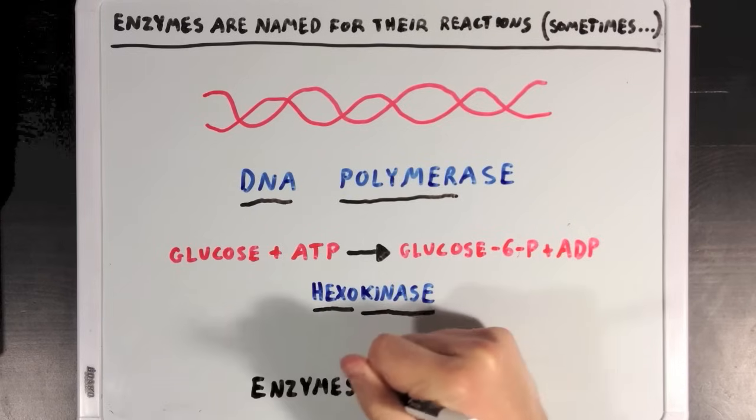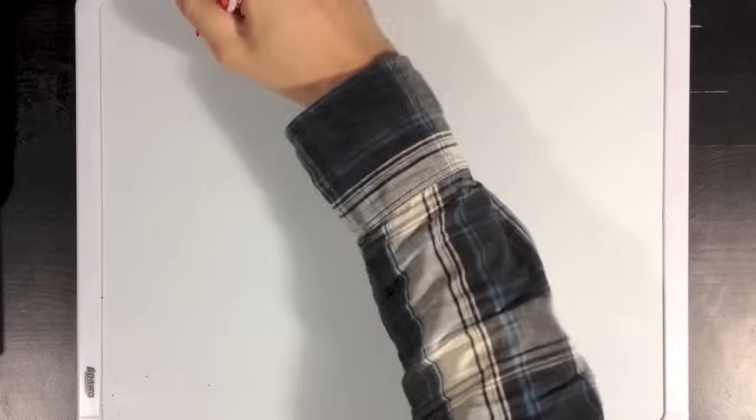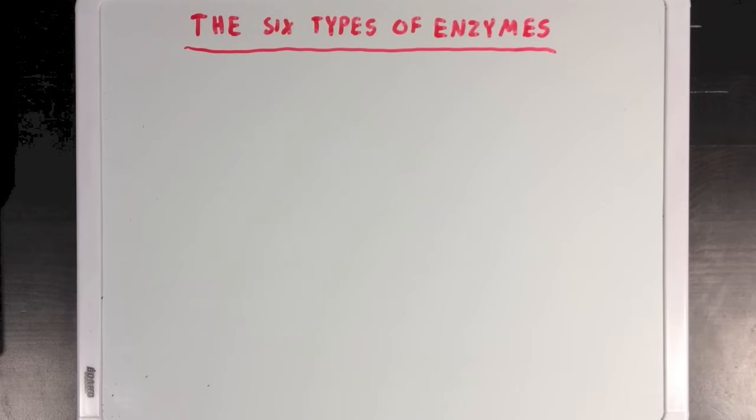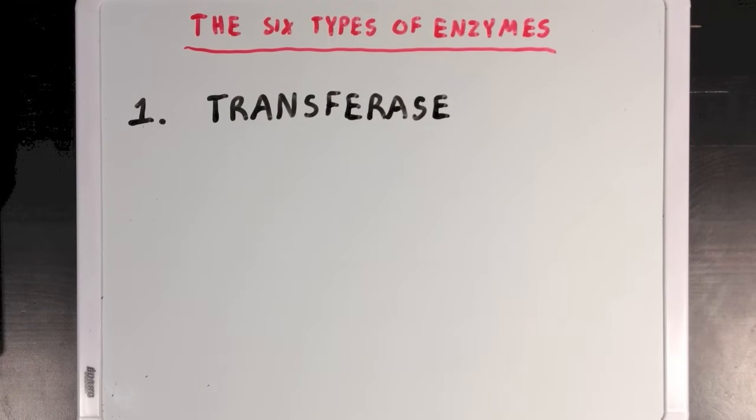Now, generally, every enzyme has a very specific name that gives insight into the specific reaction that that enzyme can catalyze. So, we can actually divide most enzymes into 6 different categories, based off the kinds of reactions that they catalyze. Now, our first group is the transferase group.